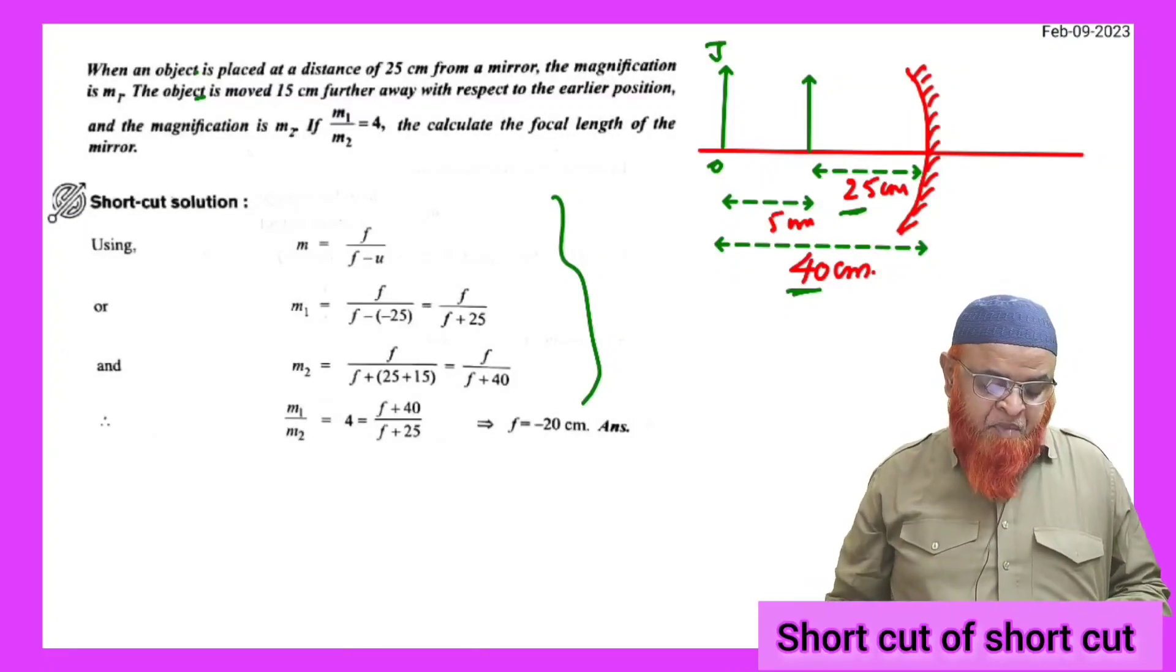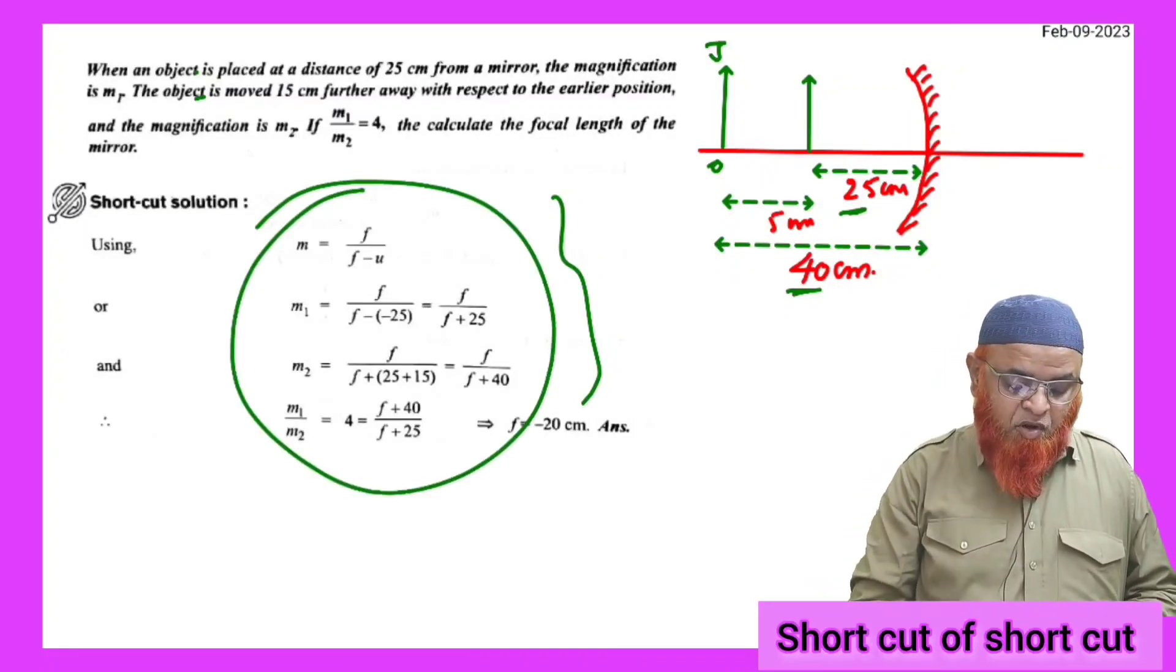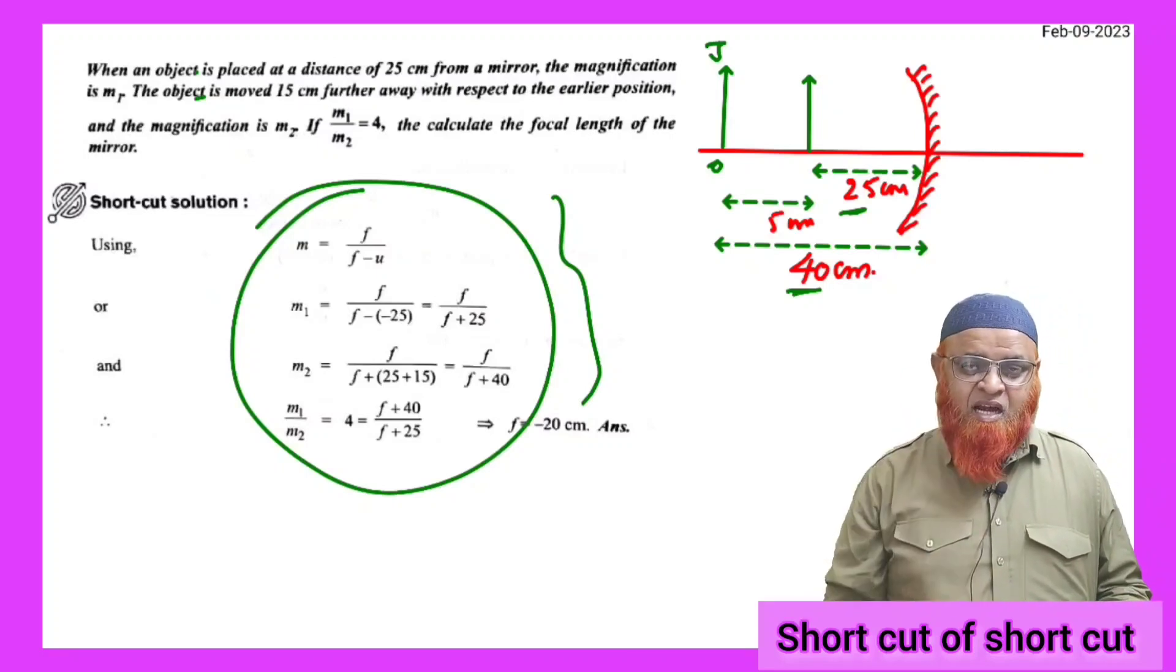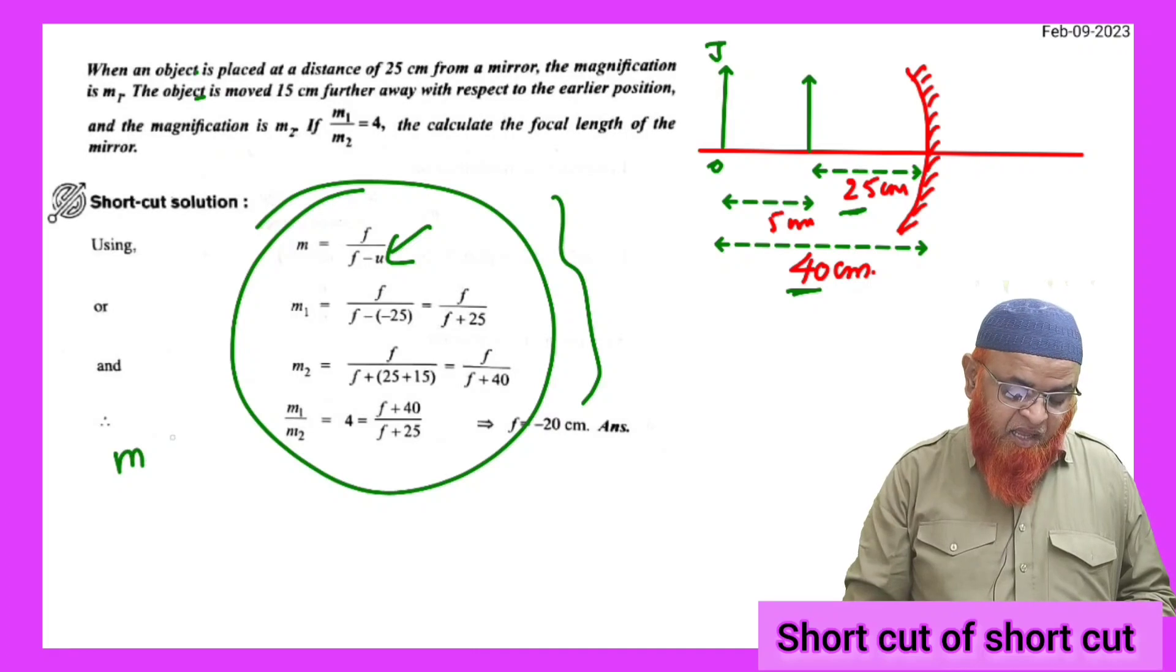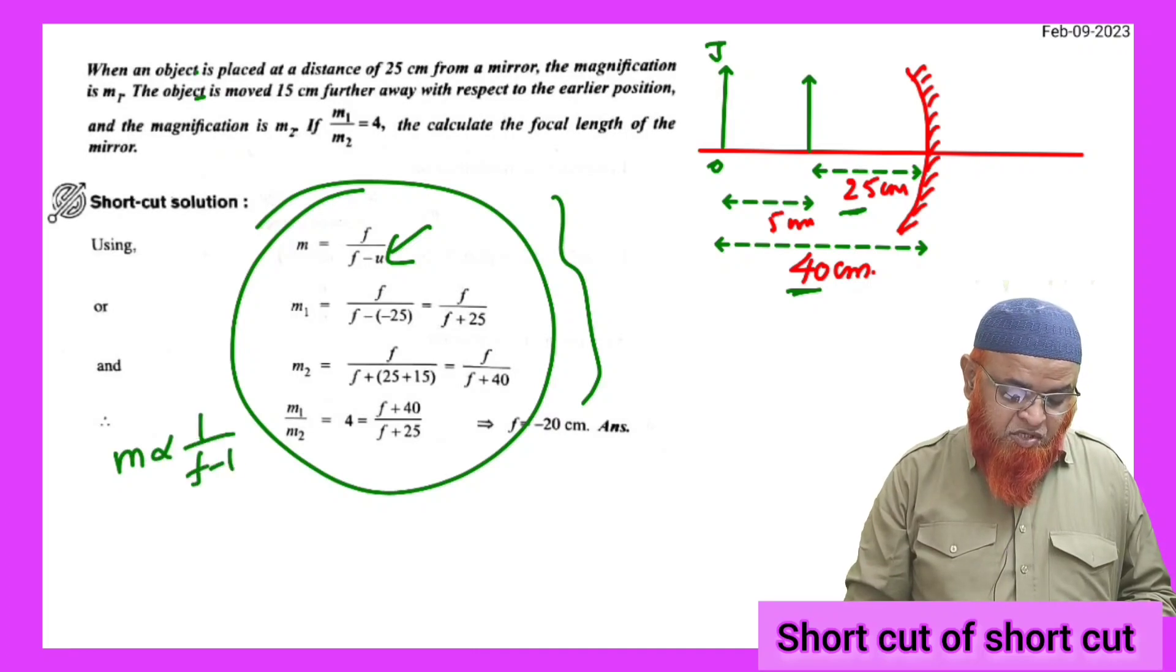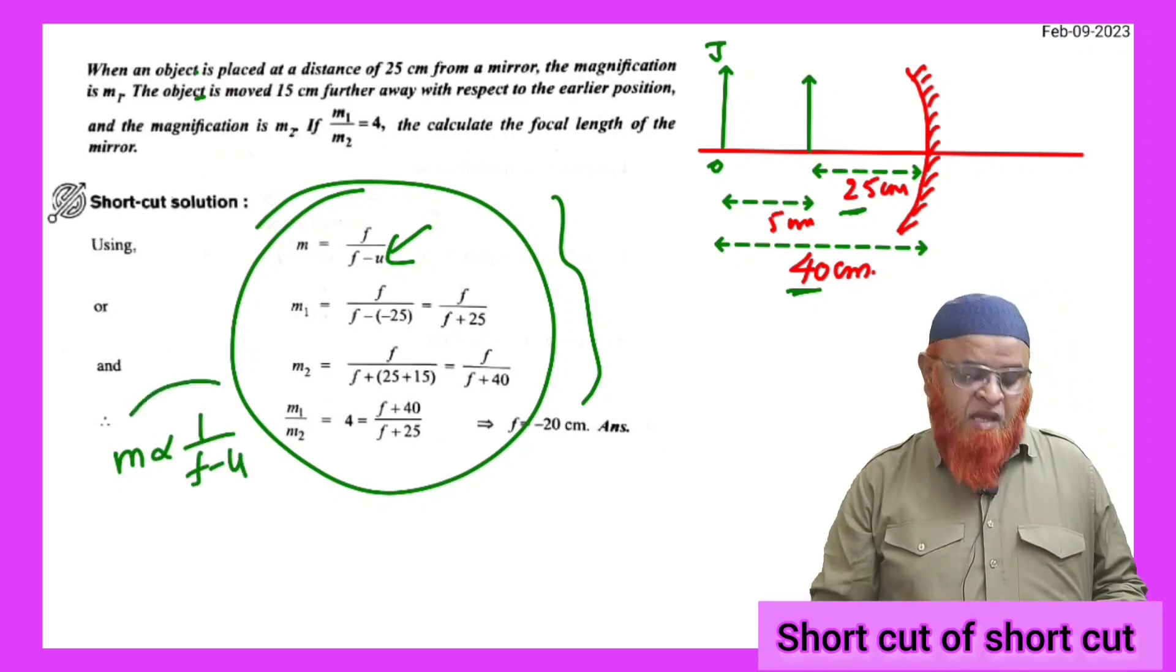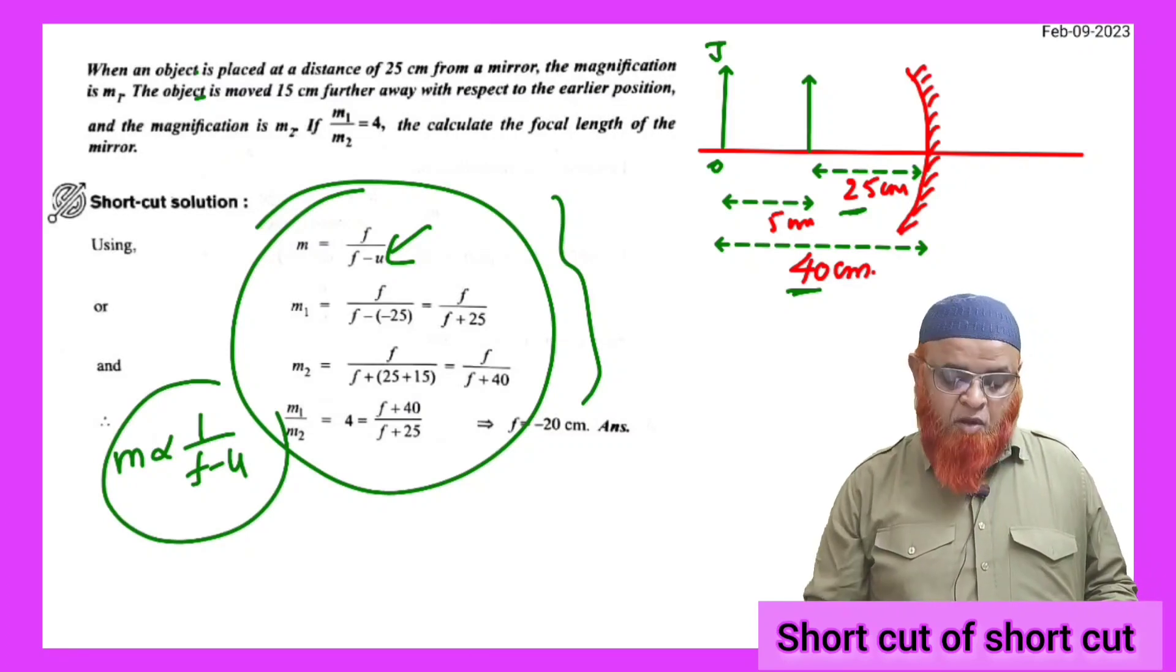You will be the fastest in India. You can just see this process. In this I will take directly one step. In this formula, I can take directly M is inversely proportional to F minus U. This shortcut formula is enough to solve this problem.